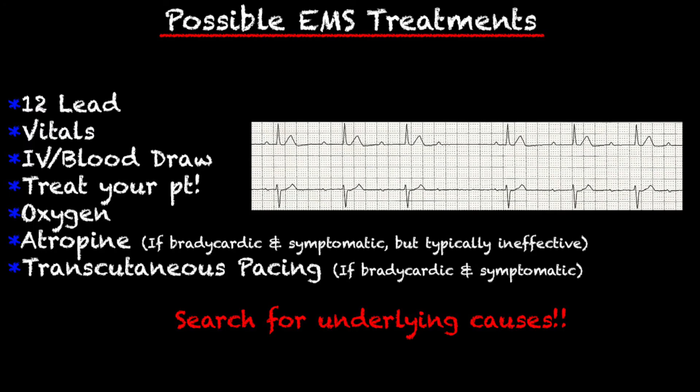As always, make sure you stay within your scope and follow your protocol. Some of the possible EMS treatments: obviously obtain a 12-lead — that's how you're going to identify it — get a set of vitals, start an IV, do a blood draw, and treat your patient's complaint. Your patient is awake, alive, and talking to you, so ask them how they feel. You can administer oxygen. If your patient is symptomatic and bradycardic, you can administer atropine, though it's typically ineffective. You can also pace if they are bradycardic and symptomatic.